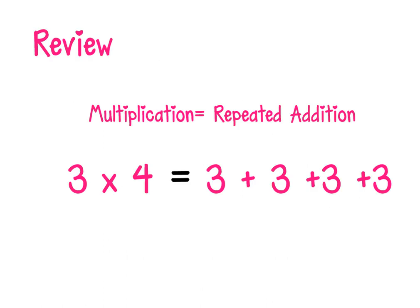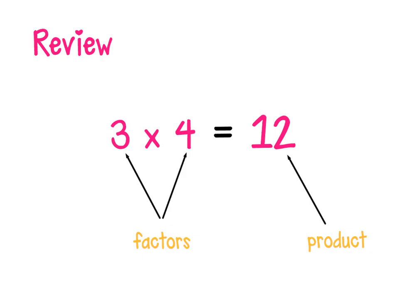Before we start, there are a couple of things we should review. The first is remembering that multiplication is a way to show repeated addition. For example, three times four means four groups of three — three plus three plus three plus three. The numbers we are multiplying together are called the factors, and the answer to our multiplication problem is called the product.